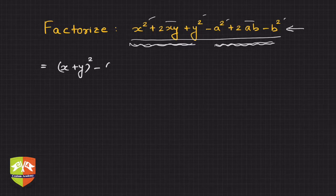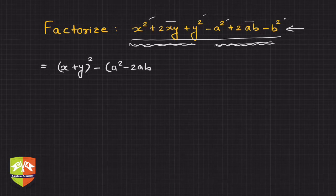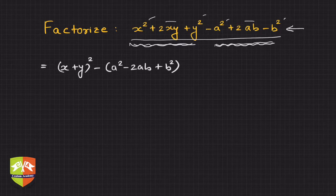And it will be a² - 2ab + b². I took minus out, and hence the moment you took minus out of the brackets, this will be reduced to this.